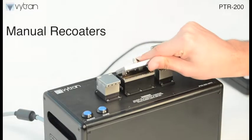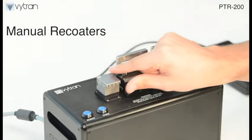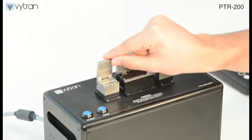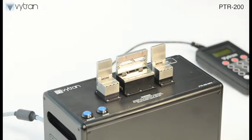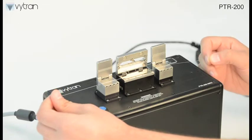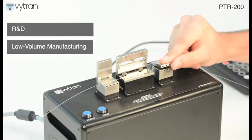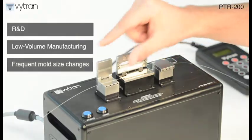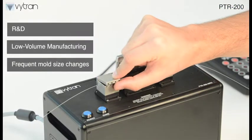Our manual recoaters feature a hinged top that is open and closed by hand. Recoat material is injected into the mold cavity via a cross-channel in the mold top plate. The manual mold is well-suited for R&D applications, low volume requirements, or if the mold size or process must be changed frequently.